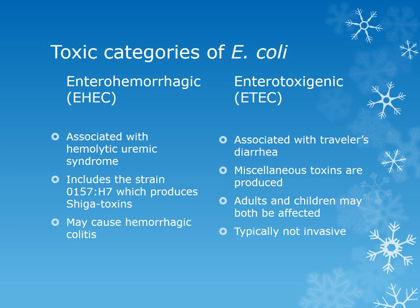O157:H7 causes about 75,000 documented infections per year and about 60 deaths annually, and it may cause hemorrhagic colitis. The ETEC strains are associated with traveler's diarrhea, where a person has large volumes of diarrhea with no blood or pus — similar to cholera in terms of stool volume. People with ETEC will have a low-grade fever, nausea, and abdominal cramps, but it is usually a mild self-limiting disease that does not destroy the gastrointestinal mucosa.